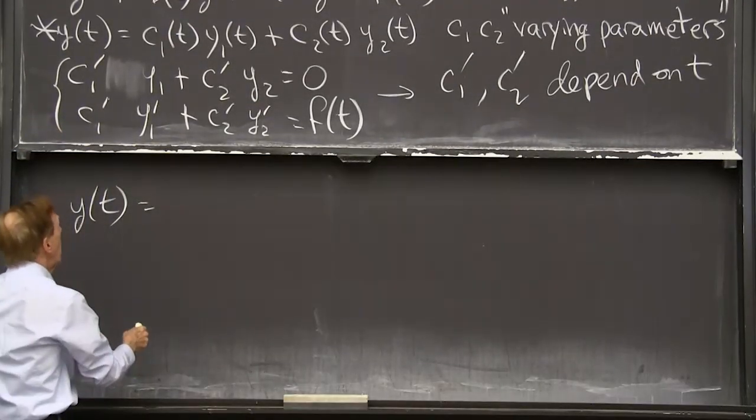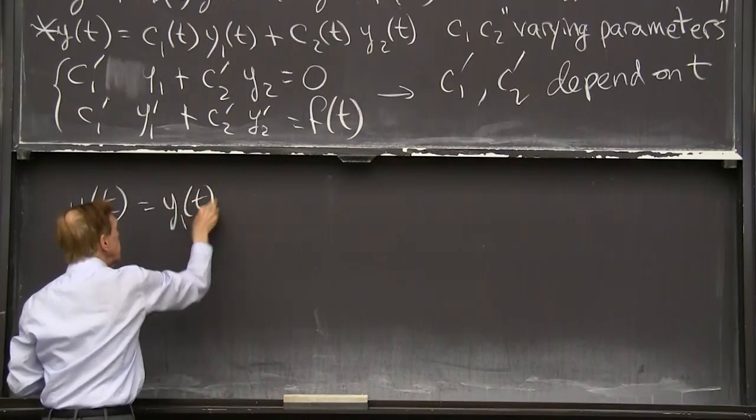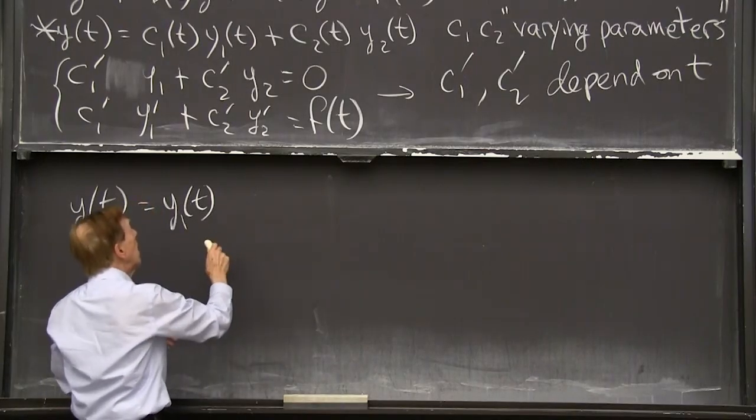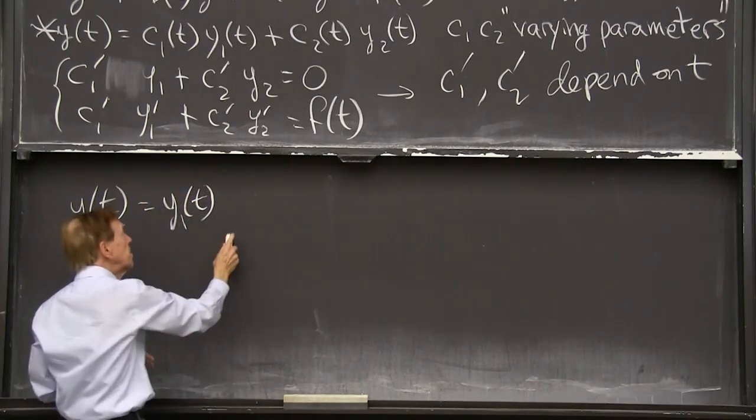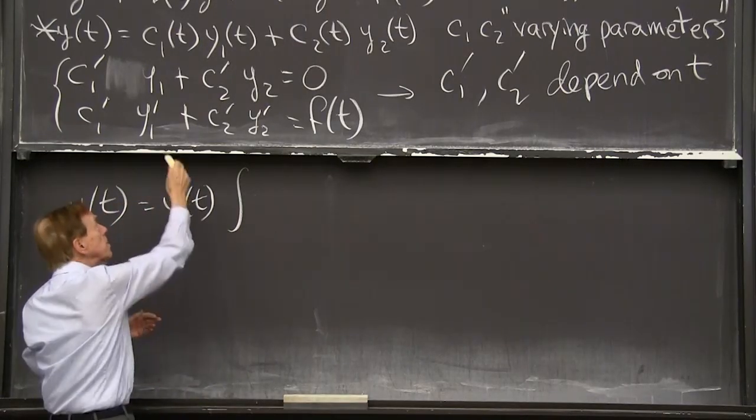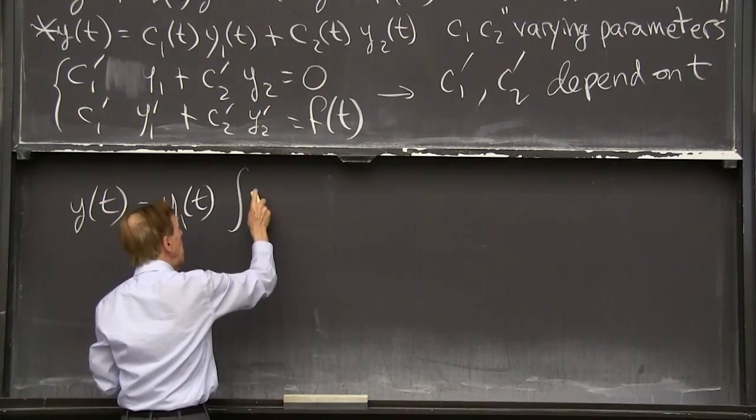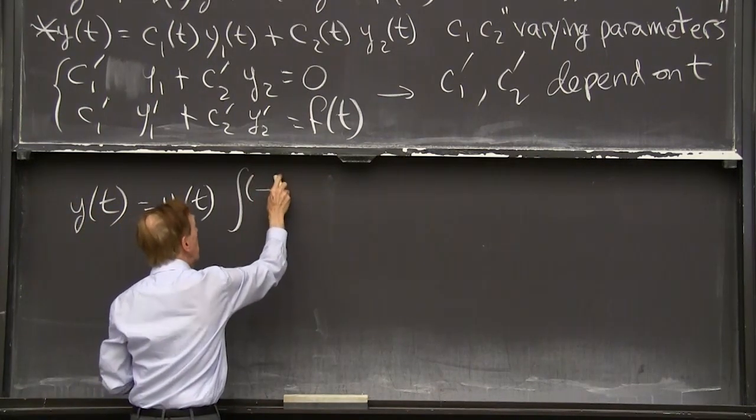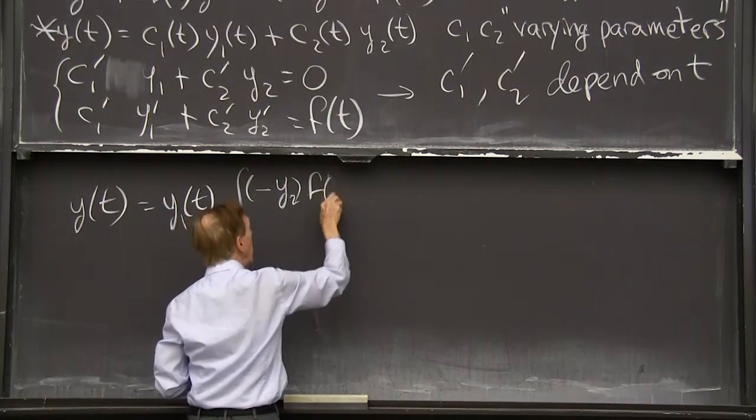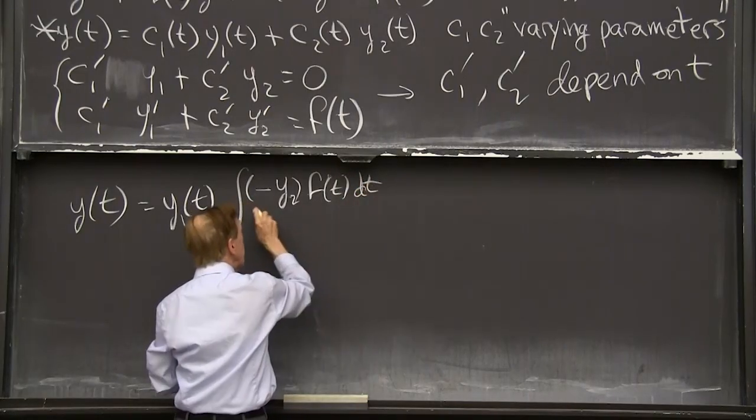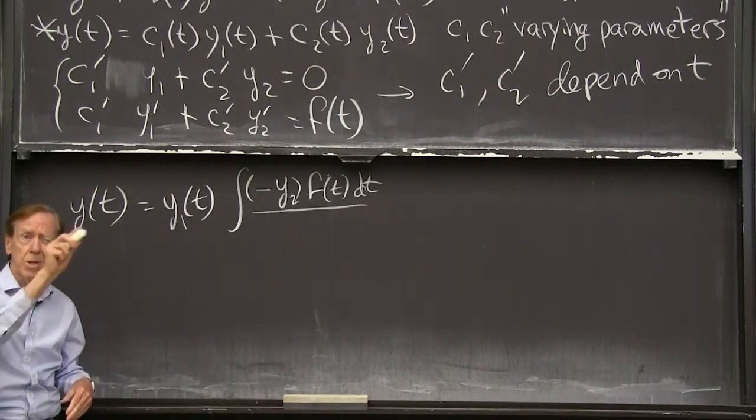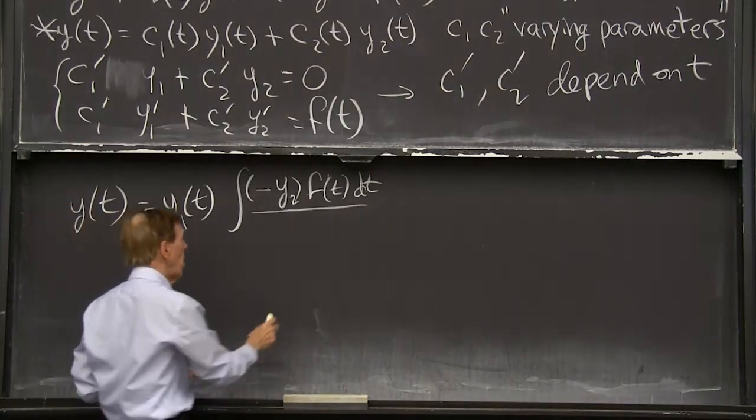And then when we solve them, we put them back into y of t. And I'll just write the answer. I'll just write it so I'm not doing all the gory calculations. I'm just going to write the answer. So y of t is going to be, just to be sure, I'm looking here. That's what I'm going to write. And I'm going to put c1 and c2 into that. c1 and c2 come from these two equations. So I have y1 of t times c1. Now the c1 that comes out of that happens to be, well, c1 prime comes out of it, so I have to integrate. I have to integrate c1 prime.